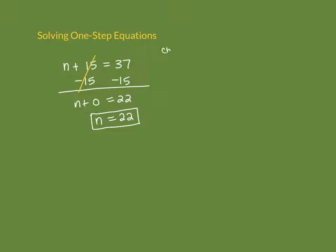Let's make sure that's correct. Instead of n, write 22: does 22 plus 15 really equal 37? Use a calculator to check, especially when negatives are involved. 22 plus 15 is 37, so 37 equals 37. Our answer is correct.